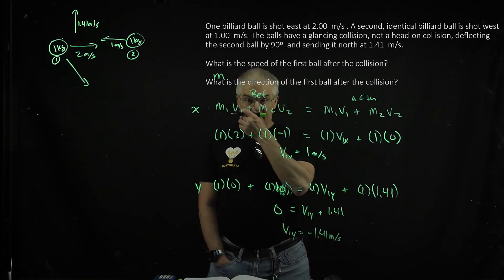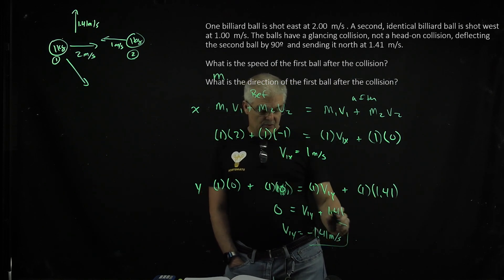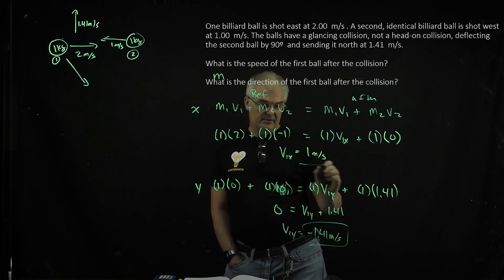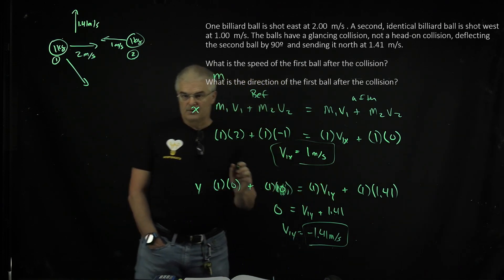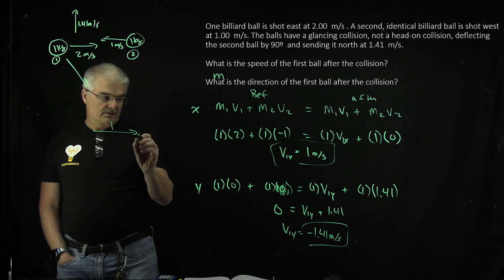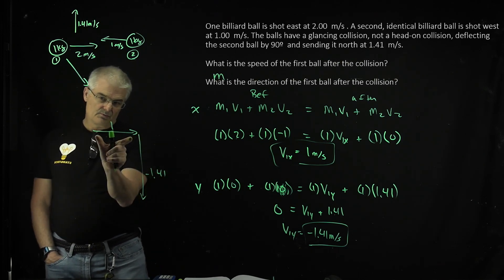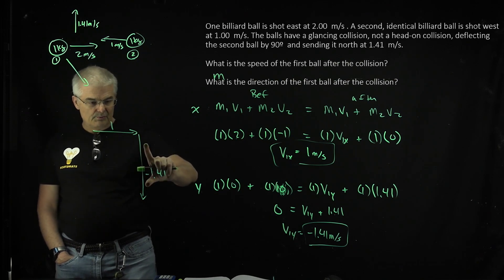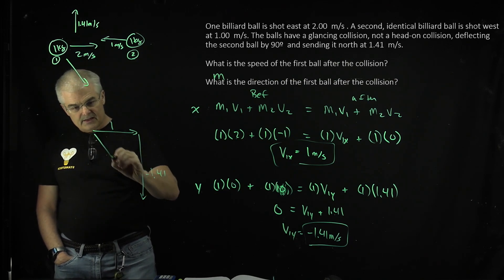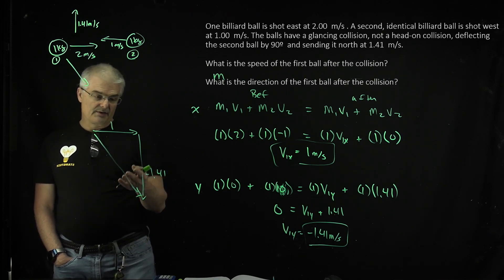Now, what's it asking? What's the speed after the collision? Now, you have to add them vectorally. Let's actually draw them out. In the x direction, it's positive 1, and in the y direction, it's negative 1.41. See how I make this one 1 long, and this is longer than 1.41? Because the actual velocity is the hypotenuse of this triangle.